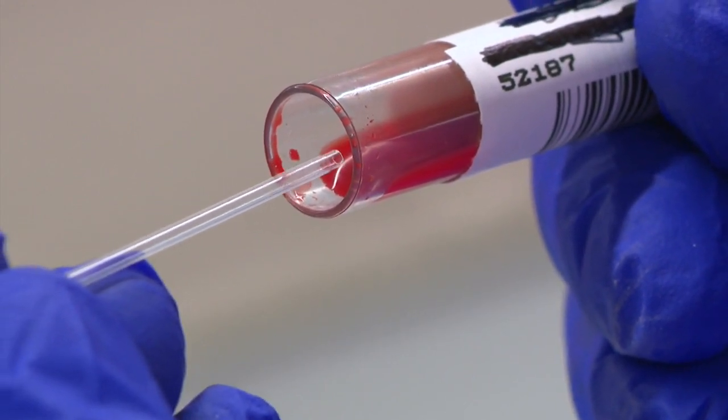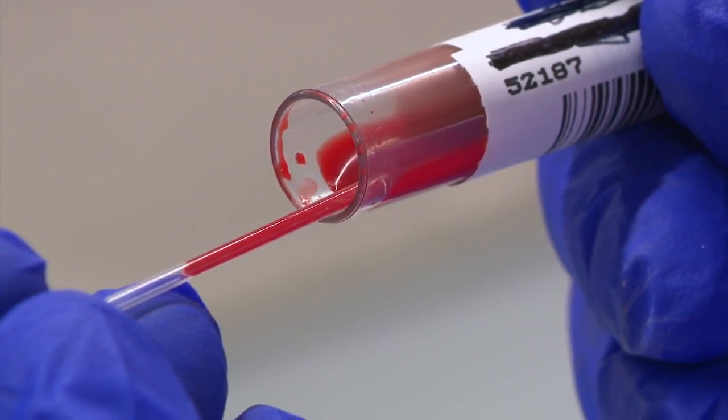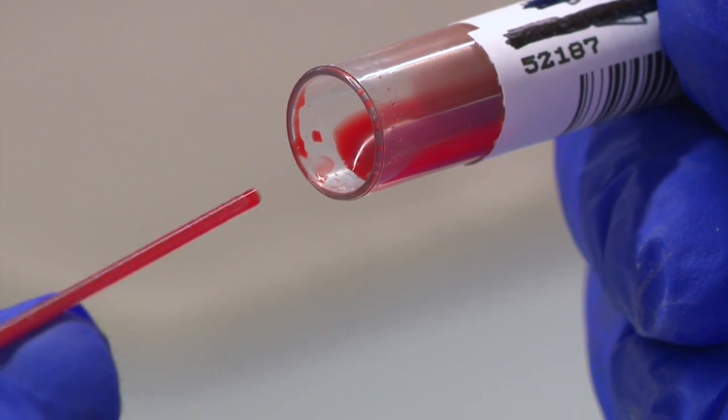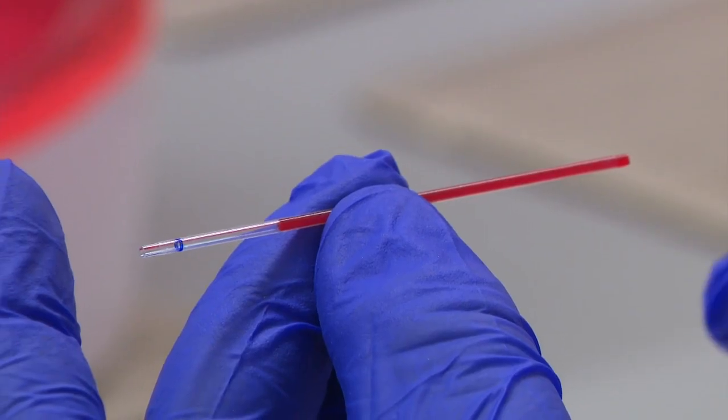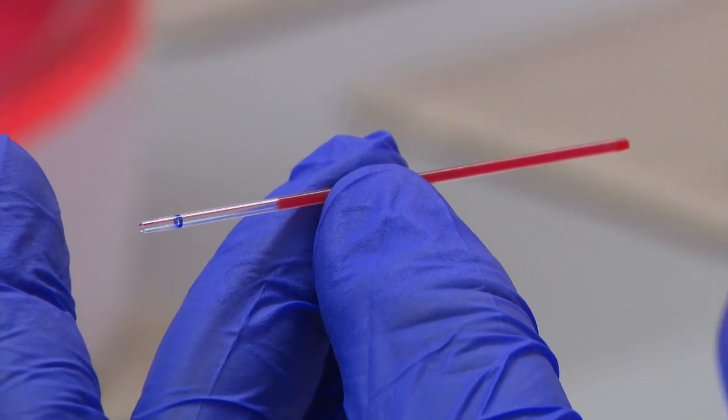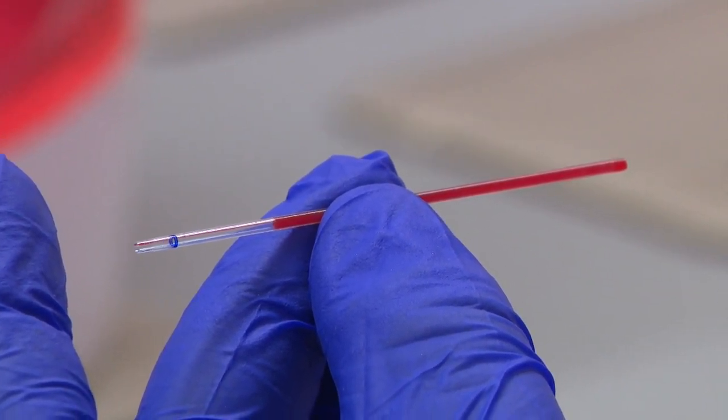Carefully tilt the EDTA sample so that the blood moves closer to the open end of the tube. Place one end of the micro hematocrit tube in the blood and then tilt the micro hematocrit tube down. It will fill with capillary action. Place your finger on the opposite end of the capillary tube and hold it there to stop the blood at the correct height.